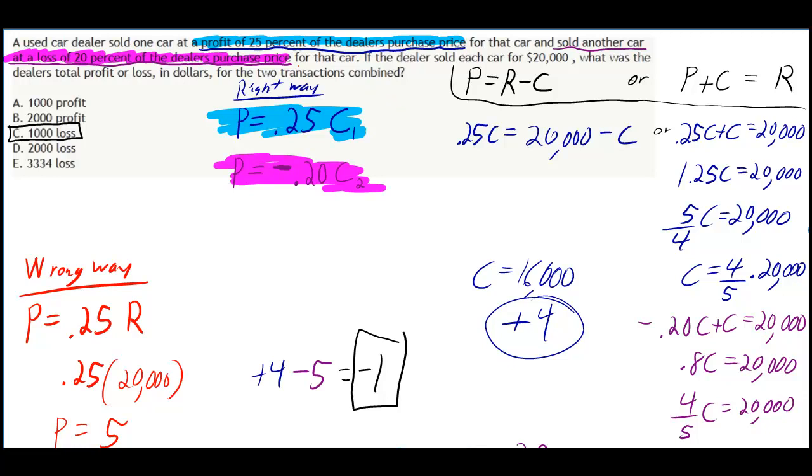In blue, I put the profit is 25% of the dealer's purchase price, which is the same as 25% of the cost of the car. Cost and purchase price are both the same thing. In blue is the right way of doing it - the profit is 25% of the cost. The wrong way would be saying the profit is 25% of the revenue. When people say 25% profit, I've only ever heard of 25% of the cost.